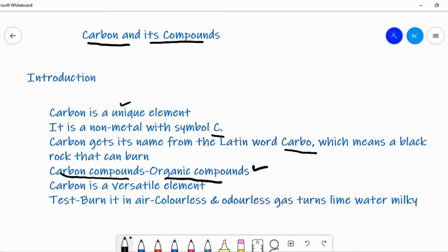Carbon is a versatile element. The earth's crust has only 0.02% of carbon in the form of minerals like carbonates, hydrogen carbonates, coal, petroleum, etc. and the atmosphere has 0.03% of carbon dioxide.